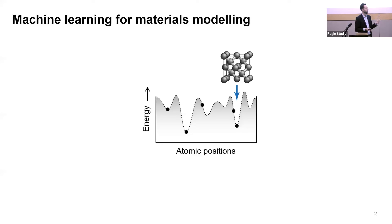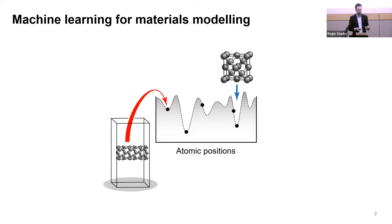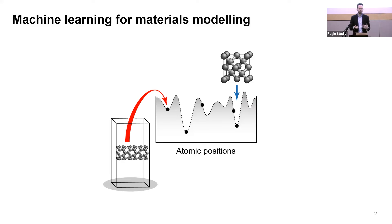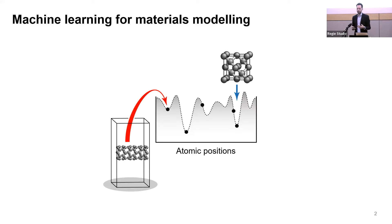We want to know for any given chemical material what its energy is as a function of where the atoms are. I always draw these wiggly lines — it's quite cartoon-like. But imagine you work out the potential energy of the element carbon. You would have diamond in a minimum on the surface, and you would have, for example, a carbon nanotube — a one-dimensional tube of graphite-like atoms rolled into a sheet.